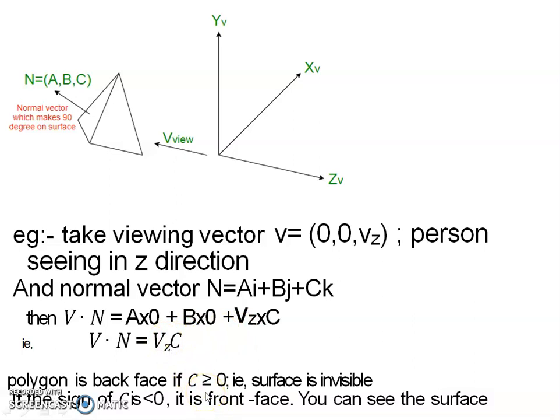Then we have to check the sign of C. If C is greater than or equal to 0, the polygon is in the back face, that is, the surface is invisible. If the sign of C is less than 0, it is front face and you can see the surface. In this second way, we are taking the viewing vector in the z direction with normal vector coordinate A, B, C, then checking whether Vz into C is greater than 0 for back face or less than 0 for front face.